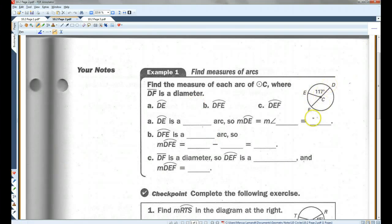So, we're given that DF is a diameter. That means this whole thing is a semicircle equaling 180 degrees. So, if the whole thing is 180, let's see if I can draw a better arc than that. So, if this whole thing is 180, and this is 117, well, let's see here. 180 minus 117, 63. This has to be 63, which means that this has to be 180.